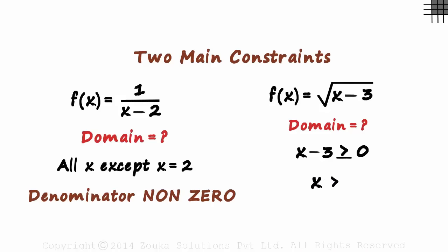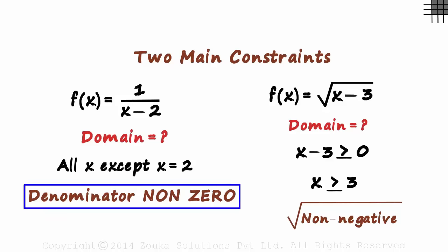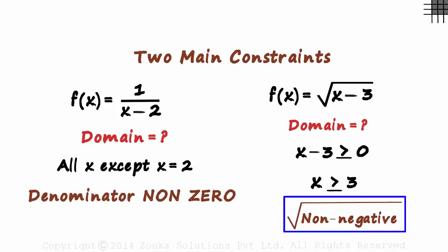X can take any value which is greater or equal to 3. That brings us to the second constraint. Even roots can have only non-negative numbers under them. Remember this well. The denominator has to be a non-zero. And even roots cannot have a negative number under them.